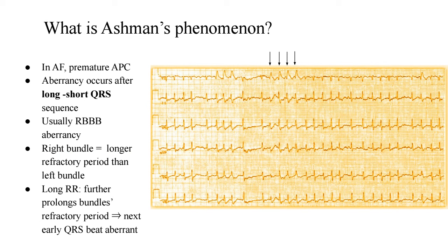How do you differentiate the QRS morphology of ventricular tachycardia versus a bundle branch block? There are various morphological criteria for which you'll have to watch part two of the video series on this approach to wide complex tachycardia. As always, like, share, subscribe, comment and press the bell icon. I'll see you next time with another video.